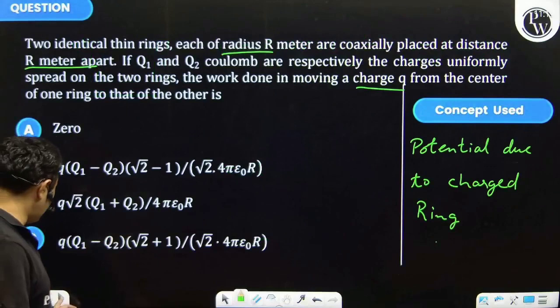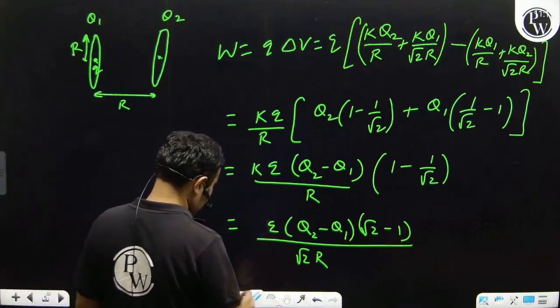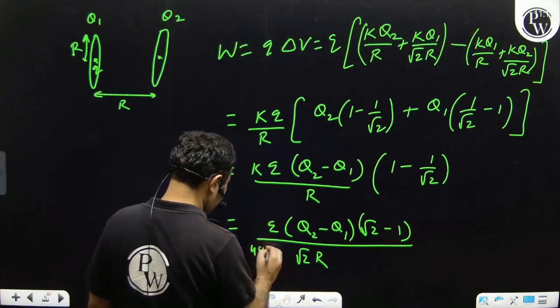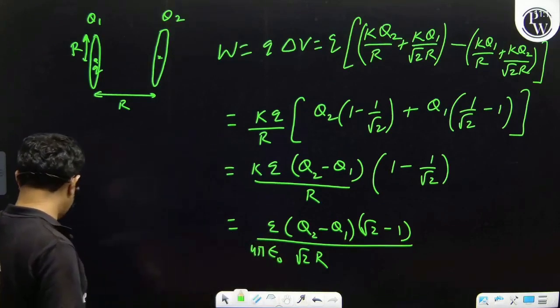Because value of K is 1 over 4 pi epsilon not, so we can write it as q over 4 pi epsilon not R times the expression.